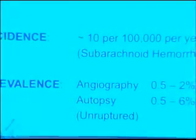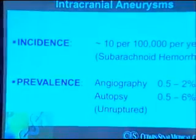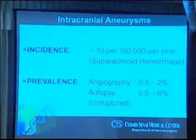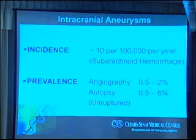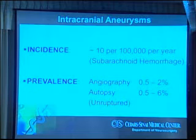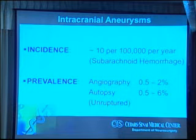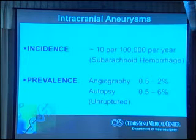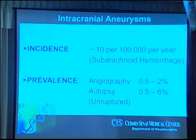A ruptured brain aneurysm is not terribly common — about 10 out of every 100,000 people have a ruptured aneurysm per year — but it does mean that just here in Los Angeles there are probably about 1,000 people a year with a ruptured aneurysm. Most aneurysms do not rupture, and there's a critical size of probably about five millimeters or so. In the general public, about one out of 100 people have an aneurysm. You're not born with an aneurysm — they really don't occur in children — but around age 15 to 20 is when you start seeing brain aneurysms.